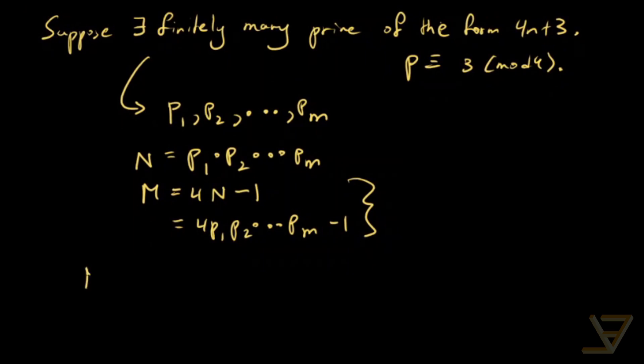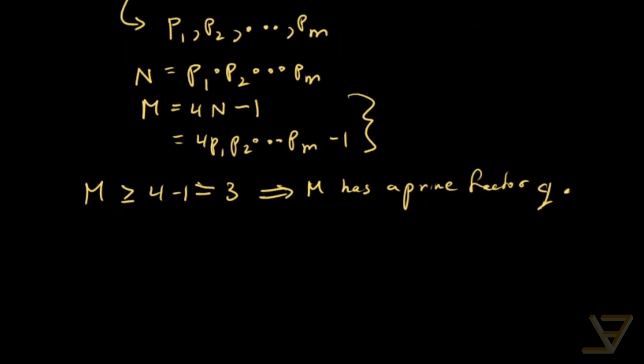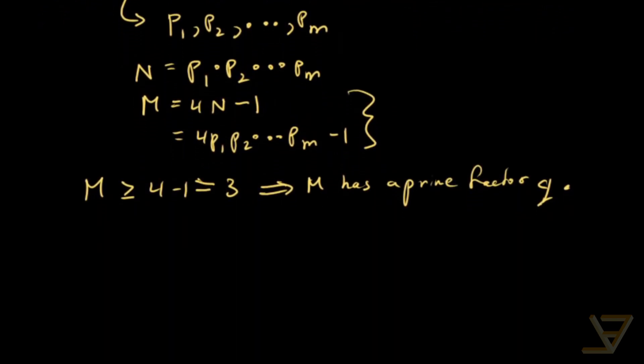First of all, note that M is greater than or equal to 4 minus 1, certainly more than that, but as a very weak lower bound it's greater than or equal to 3. So M has a prime factor, let's call it q, because any integer greater than or equal to 2 has a prime factor.